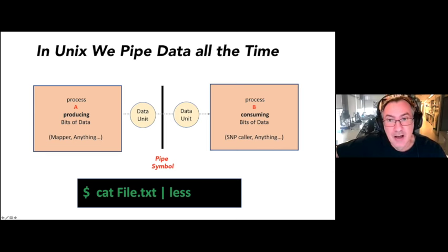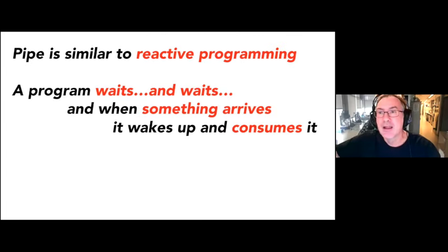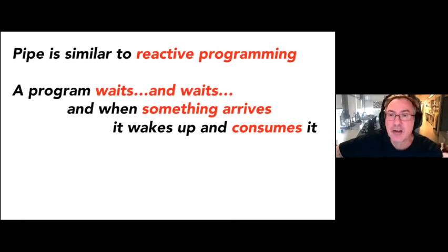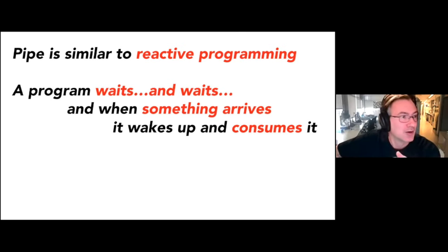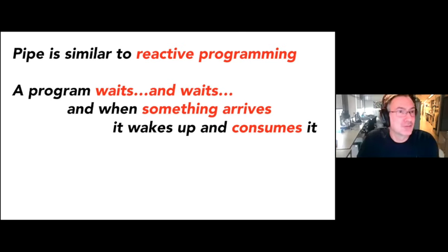If you wanted, you could be smart — when you receive the data, you could send it to many different instances of B, and this is exactly what Nextflow is going to do for you. The pipe is similar to something known as reactive programming. The idea is that you have a program waiting and waiting, and then suddenly something arrives. We've had big waves in Barcelona these last days and there were people surfing — when you look at the surfers, they do nothing, they just float in the water, and they wait for a wave.